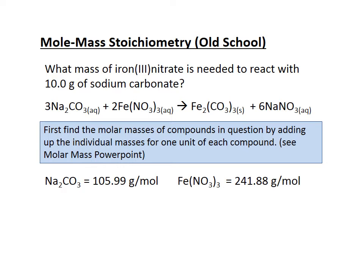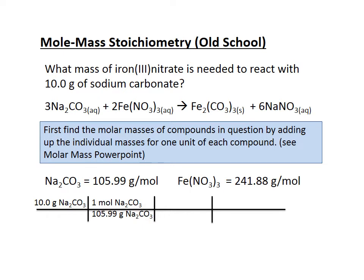You count the number of each atom present, find the molar masses on the periodic table, multiply accordingly, then add all the individual atom masses together. Starting with 10 grams of sodium carbonate — the only way to compare between two different substances is using moles — the first step is to get rid of grams and convert to moles using the molar mass of sodium carbonate. Now in units of moles of sodium carbonate, I use the mole ratios: two moles of iron nitrate are consumed every time three moles of sodium carbonate are consumed.